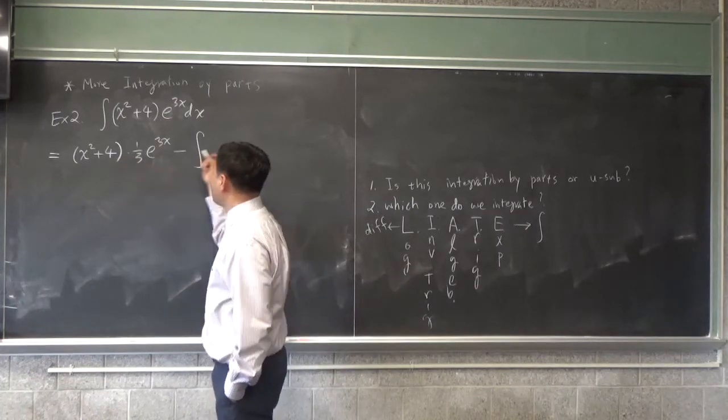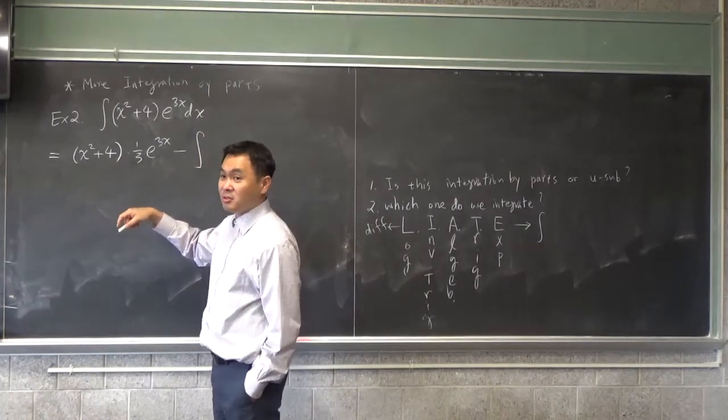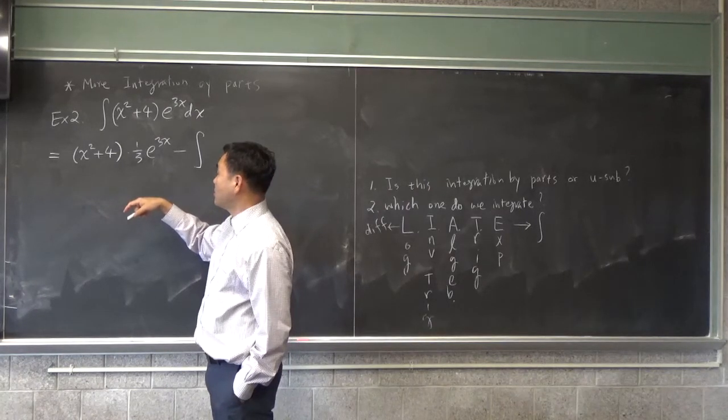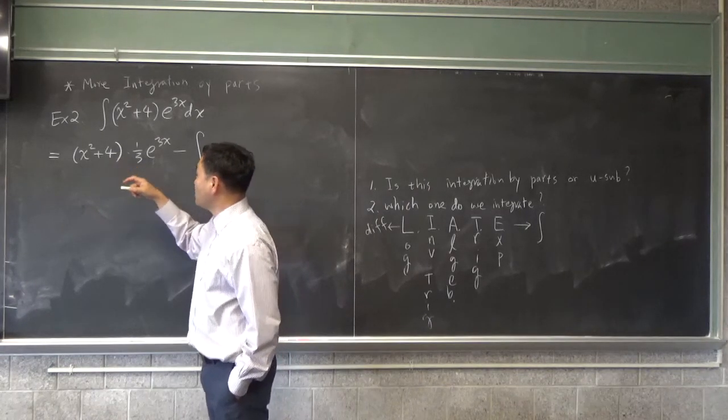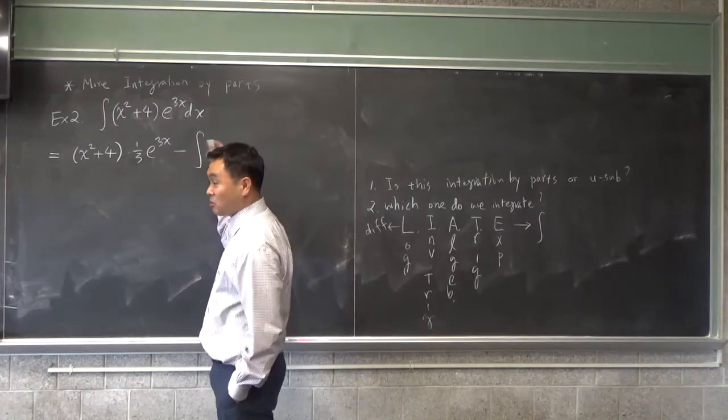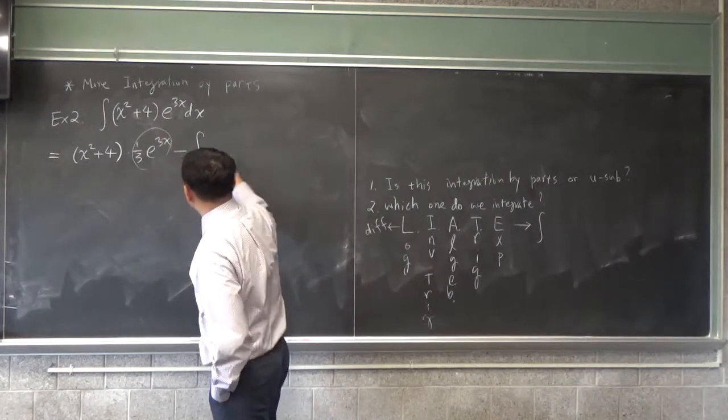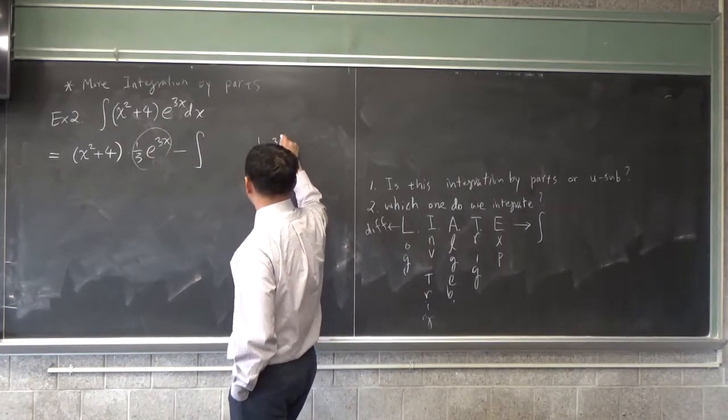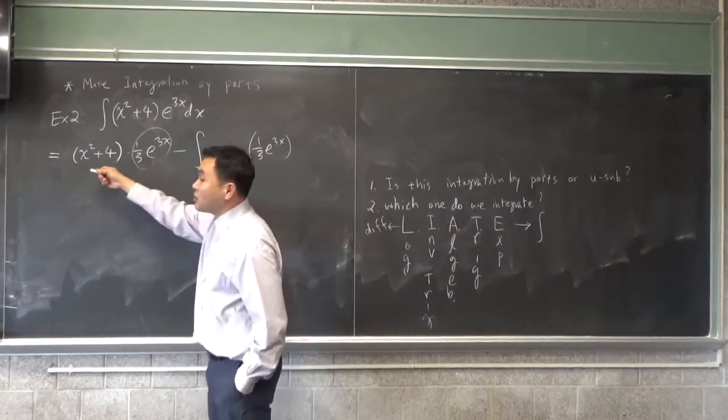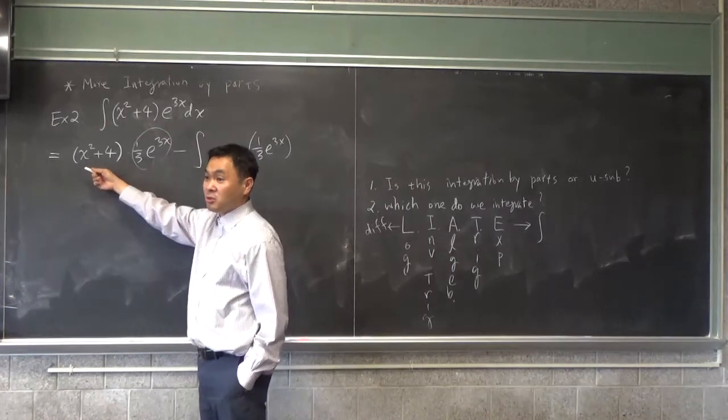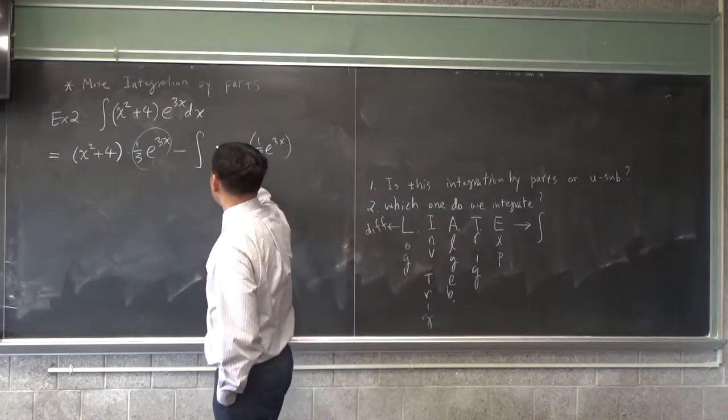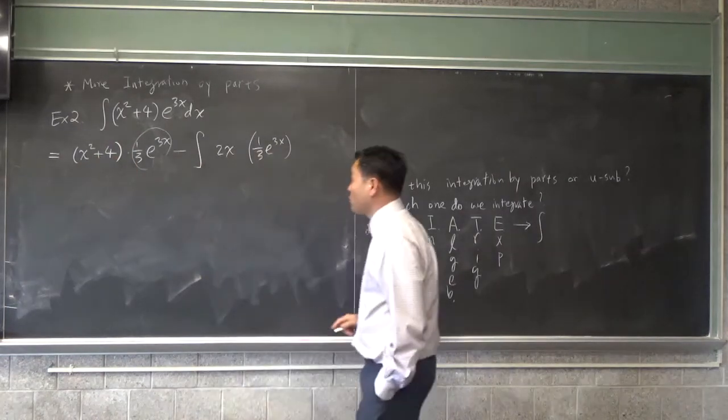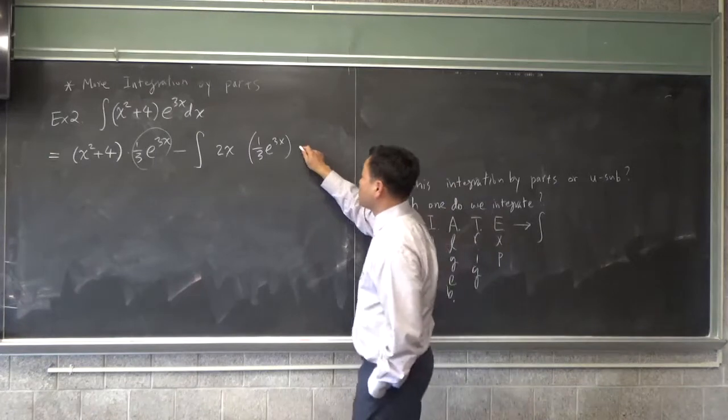Now we talked about how the reciprocal of the number in front of x appears in front, okay? So that's what happens. e to the x integrates to e to the x, therefore e to the 3x integrates to one-third e to the 3x. And then minus integral. Now which one goes inside here unchanged? x squared plus 4, because we didn't integrate. And the one that you didn't do anything to, what do you do? You differentiate instead. So x squared differentiates to 2x, 4 differentiates to 0.